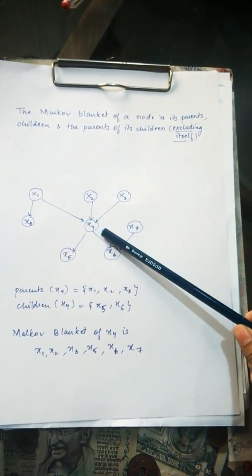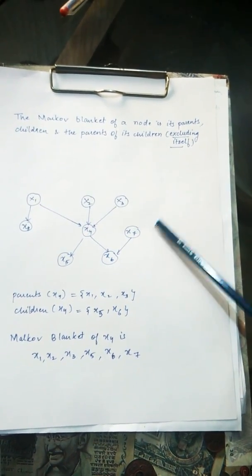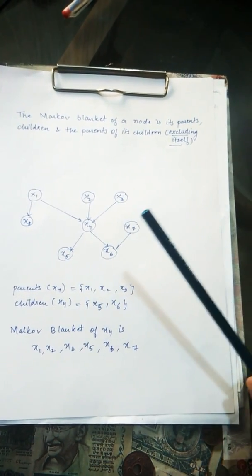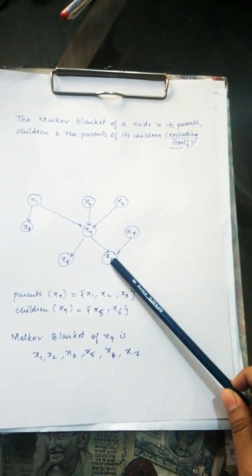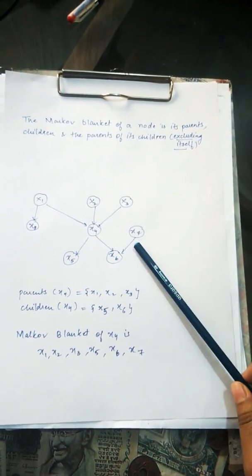So now you have to consider the parents of its children also. So here this one has no parents but node X6 has a parent that is X7.